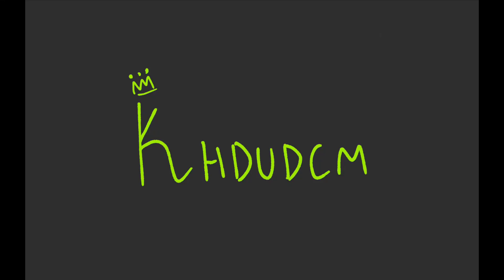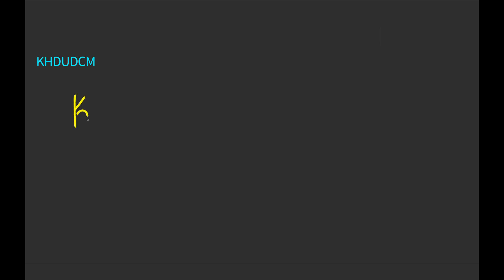Hello everyone, my name is Michelle and today we're going to be talking about converting metric units using KHDUDCM. These are the first letters of the prefixes in metric units. We start with kilo and we go to hecto, deka, unit, deci, centi, and milli.